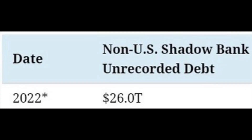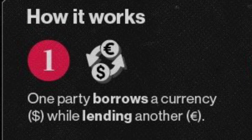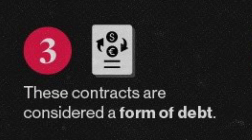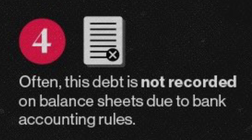So how does it work? One party borrows a currency while lending another — these must be exchanged back at a future date in what's called a swap contract. These contracts are considered a form of debt, and often this debt is not recorded on balance sheets due to bank accounting rules.